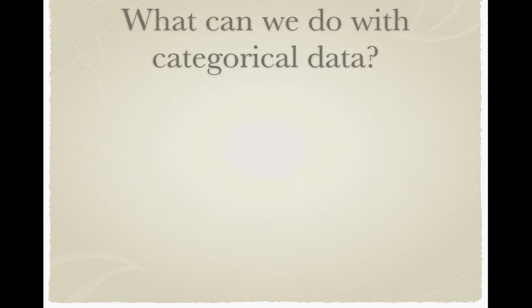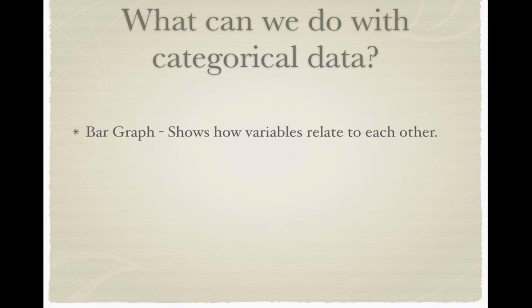What can we do with categorical data? There are several things. Some of the most common is we use categorical data to give us pictures of what our group looks like. One way we can do this is using a bar graph, which will show you how variables relate to each other — we can see the height of the bar and how each category relates to one another.